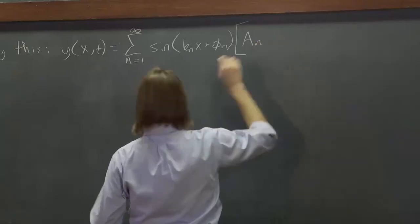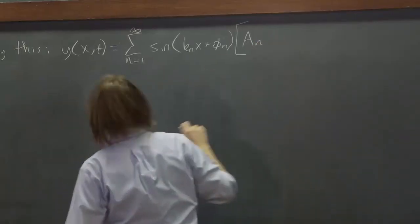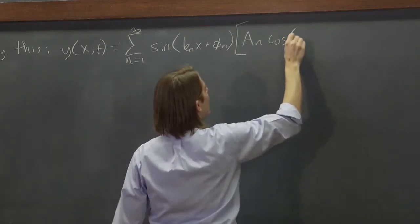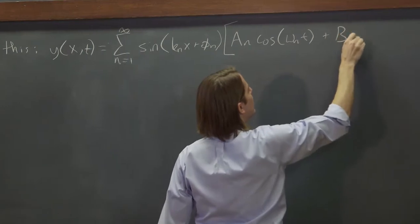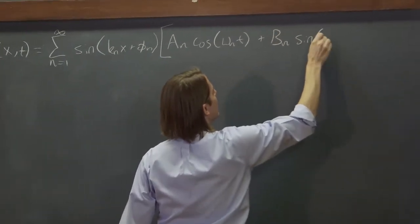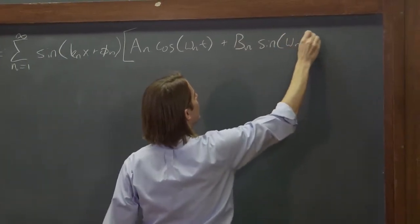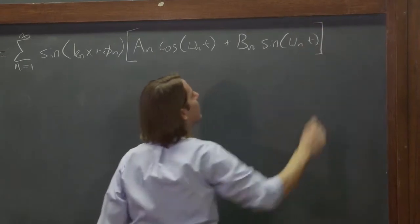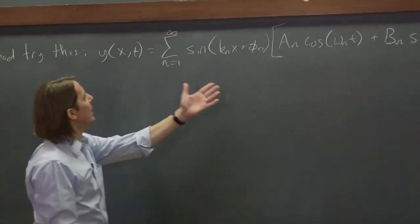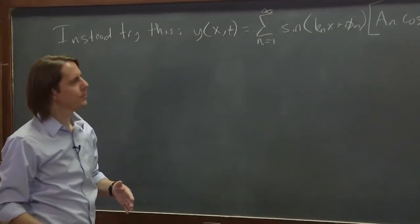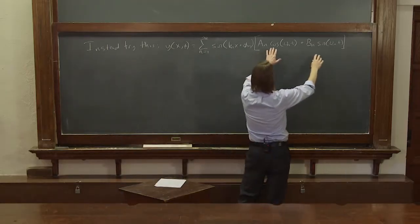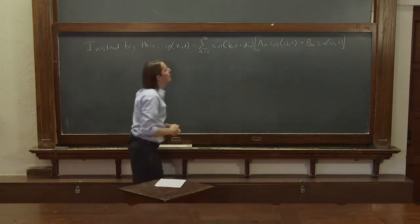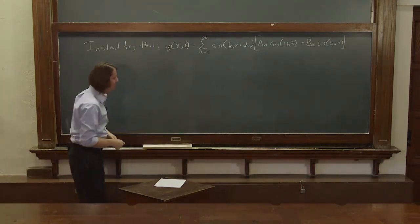So we're going to call it a_n cos(ω_n t) plus b_n sin(ω_n t), where omega_n's go with the k_n's for each term. All right. So we took the amplitude out here and we used amplitudes in front of both cosine and sine. Let's see what happens.